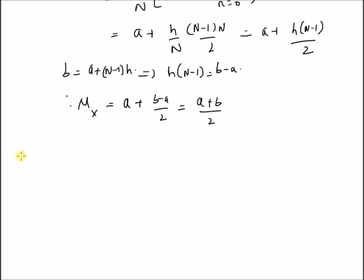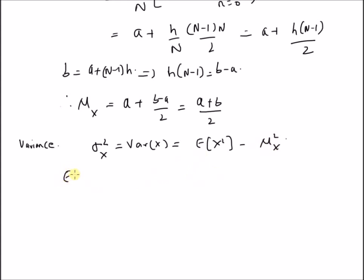Now let us derive the variance of the discrete uniform random variable. We want to derive sigma squared x, which is equal to the variance of x, which is also equal to the difference between the second moment and the square of the mean. So we have to derive the second moment first, which is equal to the summation of x squared into f of x for all possible values of x in the interval a comma b.